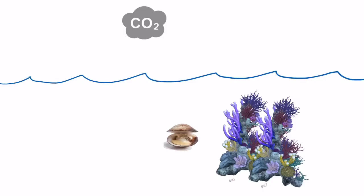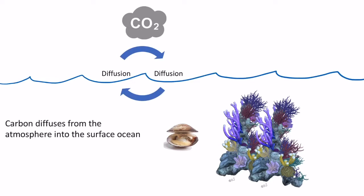So here's a basic picture of the atmosphere and the ocean, and this is where our slow carbon cycle begins. The process of diffusion, where carbon is being exchanged between the atmosphere and the ocean, occurs. And so we get carbon being diffused from the atmosphere into the surface ocean.